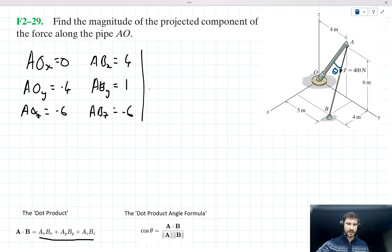OK, we can use this then to solve for the dot product of these two vectors, so we have AO dot AB. This is going to be equal to zero times four, well that's zero, minus four times one, that's minus four, and minus six times minus six, well that's 36, which is equal to 32.